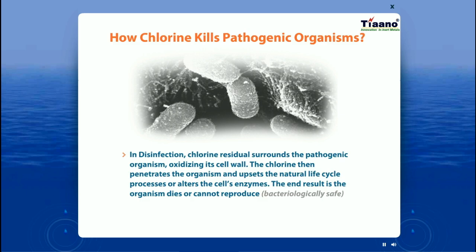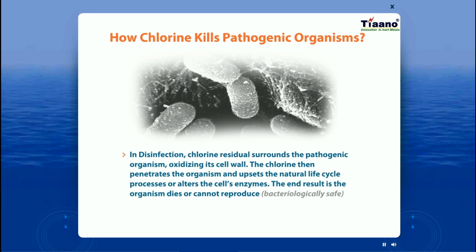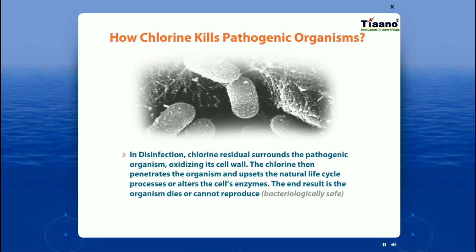It is important to understand how chlorine kills pathogenic organisms. It surrounds the organism, oxidizing its cell wall, then penetrates the organism and disrupts its natural life cycle processes or alters the cell enzymes. The end result is that the organism dies or cannot reproduce, making the water bacteriologically safe.